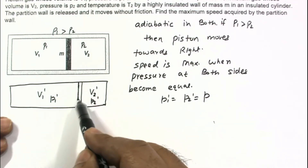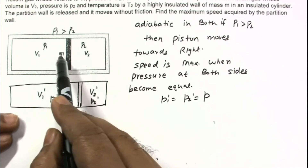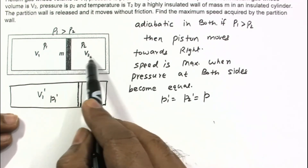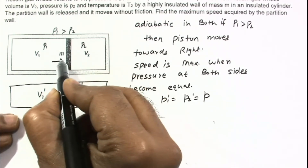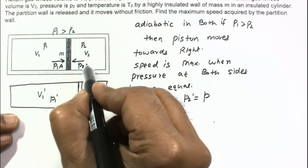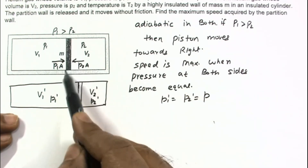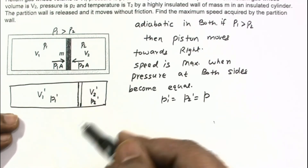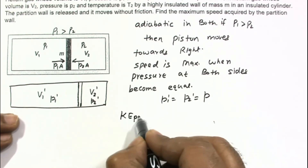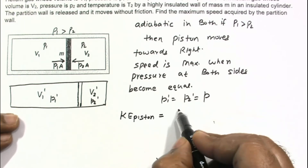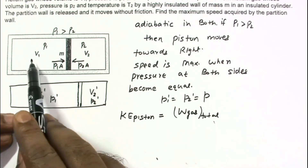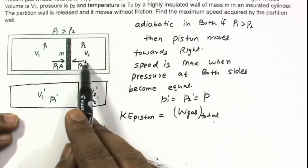To find the maximum speed or maximum kinetic energy of the partition wall, we apply the work-energy theorem. Force is applied on the piston by each gas with pressure times area on each side. The kinetic energy acquired by the piston equals the net total work done by the gases on both sides. The left gas does positive work and the right gas does negative work.